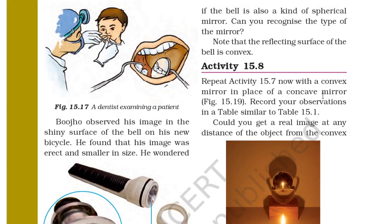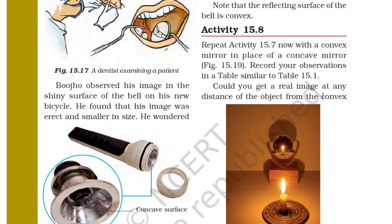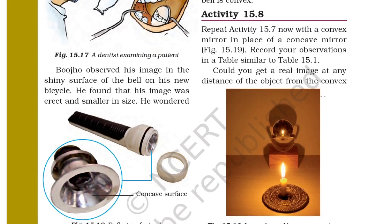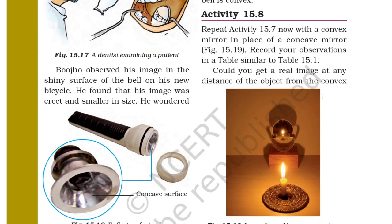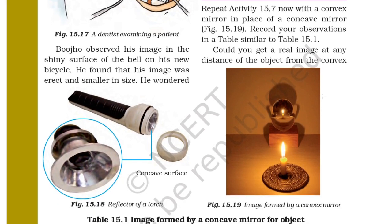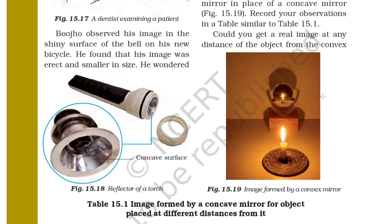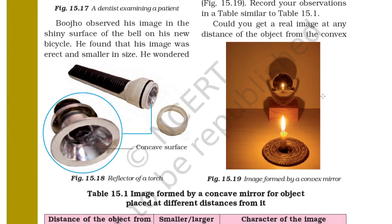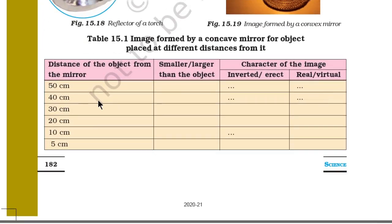If the bell is a kind of spherical mirror, can you recognize its type? The reflecting surface of the bell is convex. In Activity 15.8, repeat Activity 15.7 with a convex mirror and record your observations in a table similar to table 15.1. Could you get a real image at any distance of the object from the convex mirror? Record the distance of the object from the mirror at distances of 50, 40, 30, 20, 10 and 5 cm, and note whether the image is smaller or larger, inverted or erect, and real or virtual.